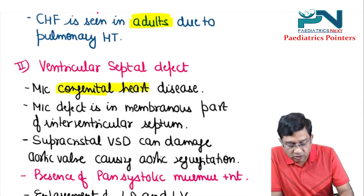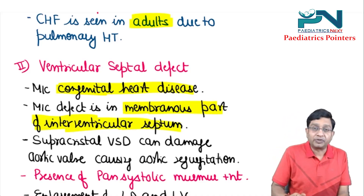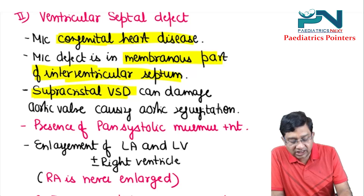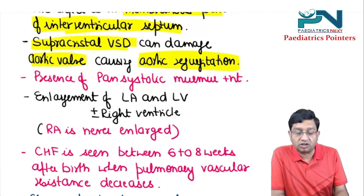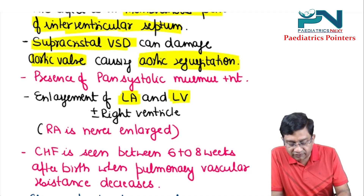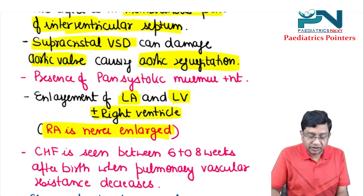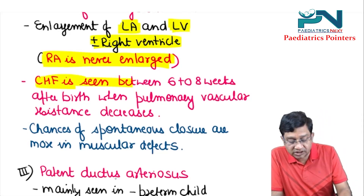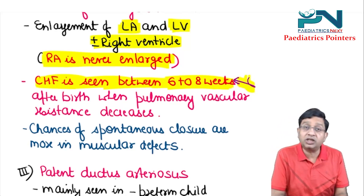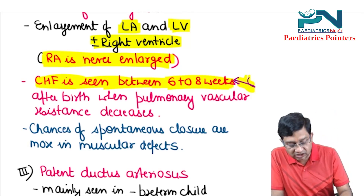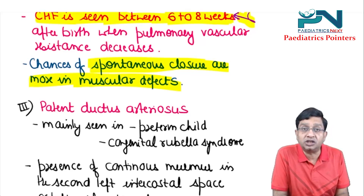Ventricular septal defect is the most common congenital heart disease. The most common defect is in the membranous part of the interventricular septum. There is also supracristal VSD, which can damage the aortic valve causing aortic regurgitation. There is a pansystolic murmur. There is enlargement of left atria and left ventricle, plus or minus right ventricle — but the right atria is never enlarged in VSD. Congestive heart failure is seen between 6 to 8 weeks after birth, when pulmonary vascular resistance decreases. Spontaneous closure can occur, but is more common in muscular defects than membranous defects.